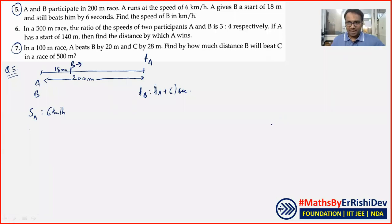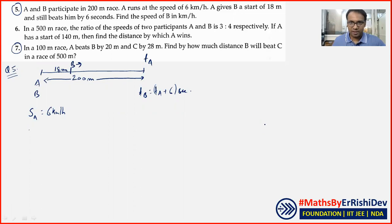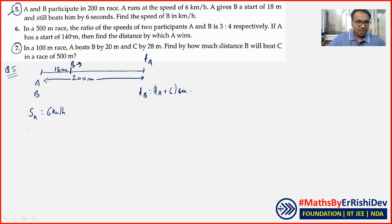Alright, coming to the second class of games and races, where we are discussing the doubts that you have given. The first doubt is question number 5. We are seeing A and B participate in a 200m race.